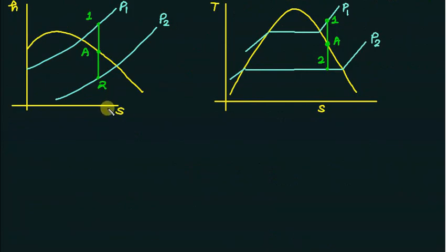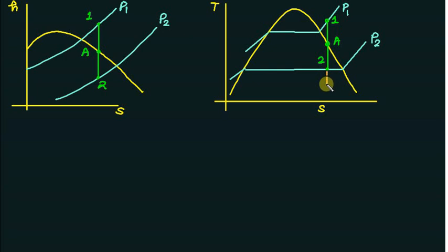Now in this figure we will see how to locate the saturation point. Point 1 is again superheated; at point A we expect the phase change; and point 2 is the exit condition — this is the theoretical concept on both the TS and HS plots. To obtain the saturation point, we extend this vertical line and extend the pressure line. Where these two lines intersect, that point is R. So 1 to R represents the supersaturation flow, and 1 to 2 represents the expansion with equilibrium condition, which is called isentropic expansion.